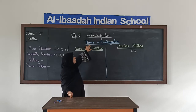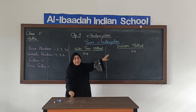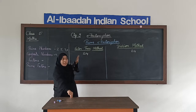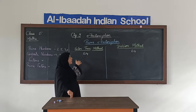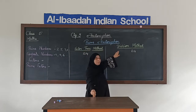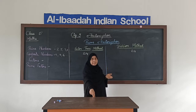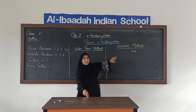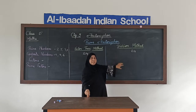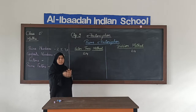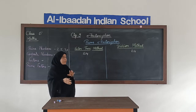In prime factorization there are 2 methods of finding the prime factors. One is the factor tree method, which you have already done in class 4 — I will just recall it. And today we are going to learn a new method, that is the division method. This will be the method we use in our further classes. This is the important method which we will be using. The factor tree we have already done in class 4, so we will just revise it.